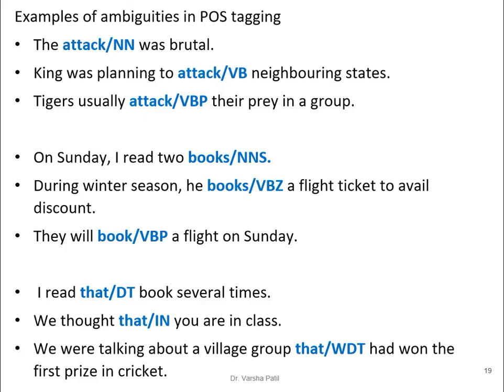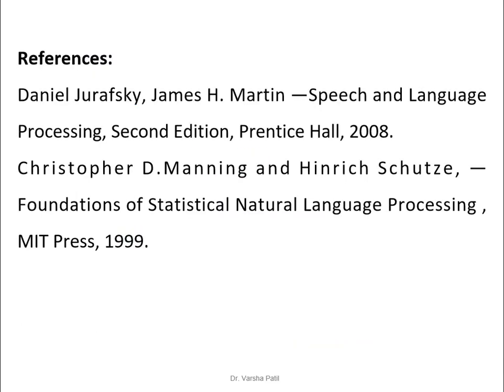Even determiners can have ambiguities. In 'I read that book several times', 'that' is a determiner (DT); in 'We thought that you are in class', 'that' is a preposition/complementizer (IN); in 'We were talking about a village group that had won the first prize', 'that' is a WH-determiner (WDT), used as a connecting word. The same word has different POS tags, which is why POS tagging is not a simple problem.